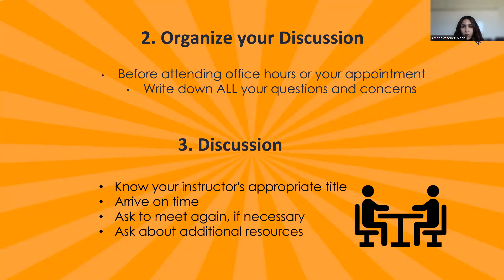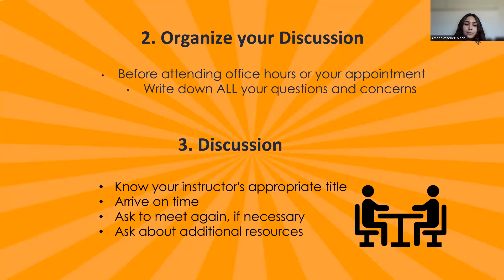The second step is to organize your discussion. Before attending office hours or your appointment, write down all your questions or concerns related to why you reached out for help. For example, if you need clarification on an exam you did poorly on, identify which problems you need help with and why. The third step is the discussion with your professor: know their last name or appropriate title, whether they go by professor or doctor. Arrive on time, ask to meet again if necessary, and ask about any additional resources to help you be successful in the class.